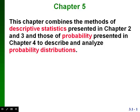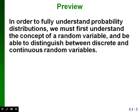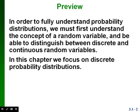This is the video for Chapter 5. In this chapter, we combine the methods of descriptive statistics presented in Chapters 2 and 3 and those of probability presented in Chapter 4. We're going to use both of these together to describe and analyze probability distributions. Probability distributions describe what will probably happen instead of what actually did happen. They're often given in the form of a graph, a table, or a formula. In Chapter 5, we will focus on discrete random variables and discrete probability distributions.